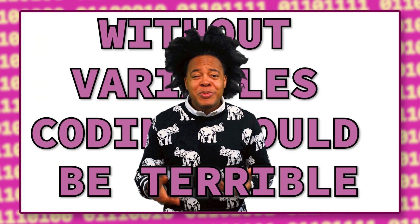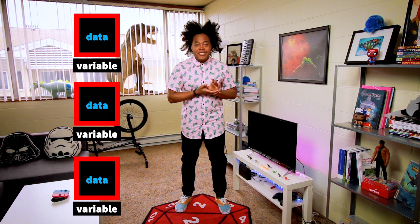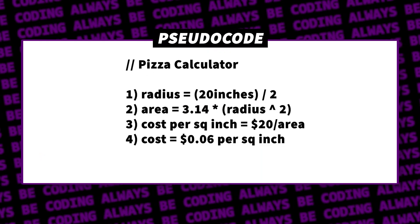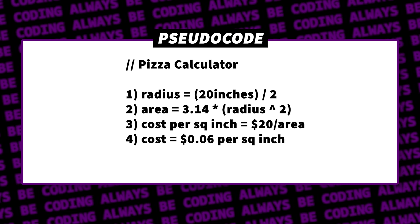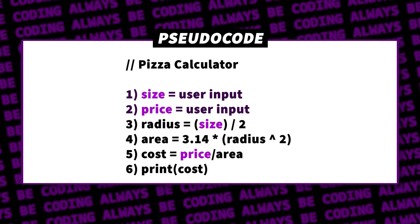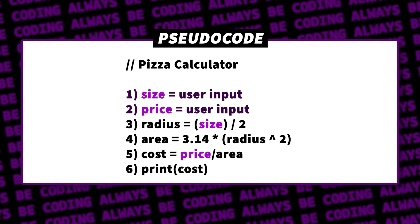There will be times when you need to work with outside data coming from people, external files, or sensors. Since we don't know the value of the data in advance, we can use variables as placeholders to catch the information, allowing us to abstract or generalize the data. For example, if a program calculated the price per square inch of a pizza but only worked for a 20-inch, 20-dollar pizza, that'd be pretty useless. But if that program were designed to use variables for the size and price as inputs, we could handle any range of sizes and prices — going from one pizza to any pizza, highlighting another benefit of using variables.